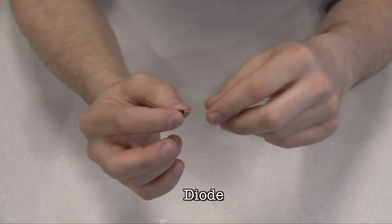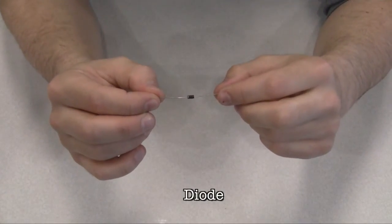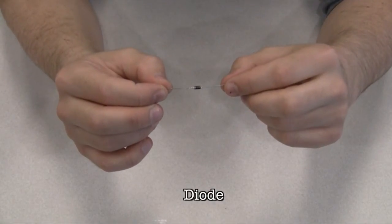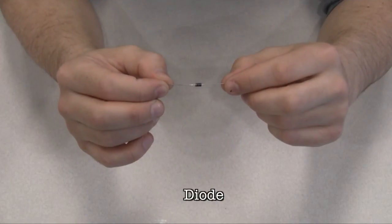The anode side generally connects to the point of higher energy in your circuit. The cathode typically connects to the point of lower energy or to ground. The cathode is usually marked with a band on one side of the component's body.